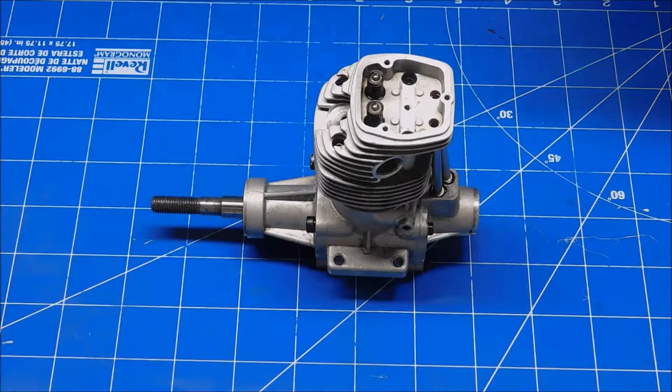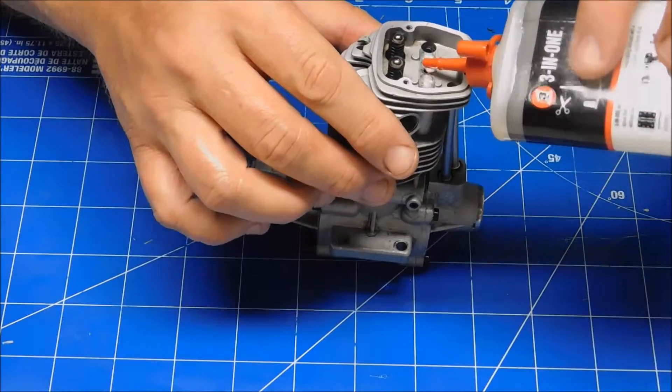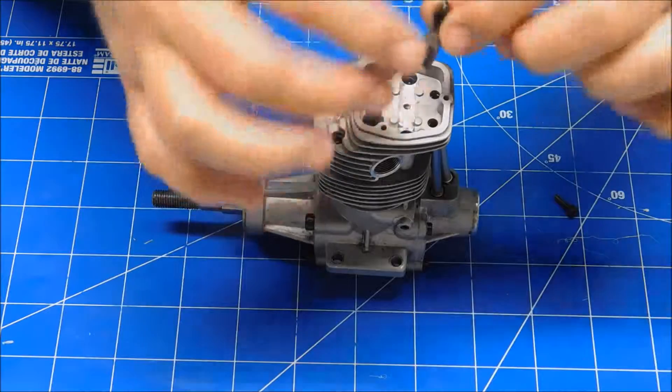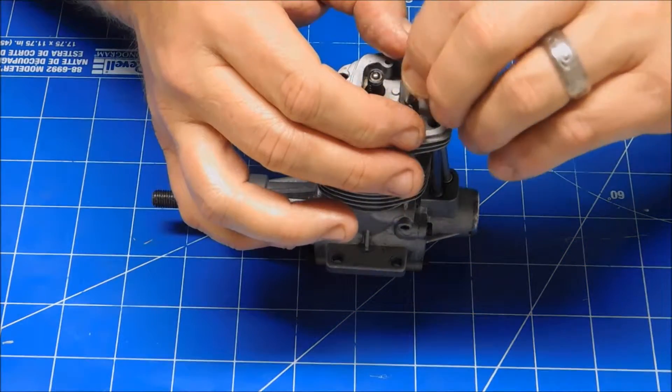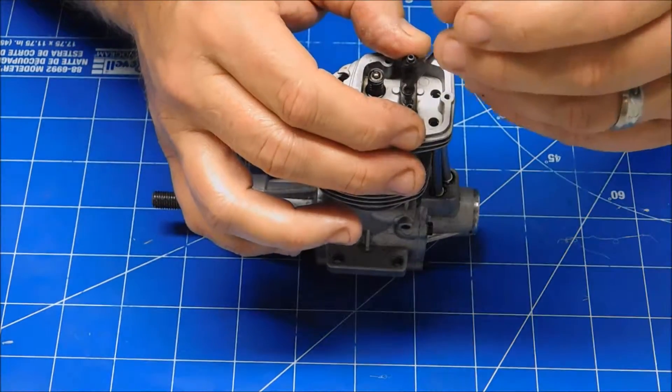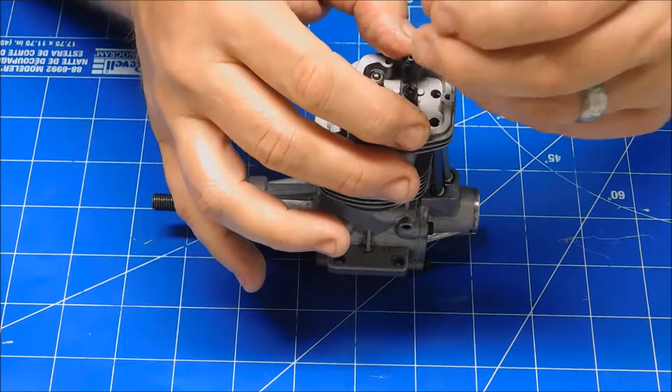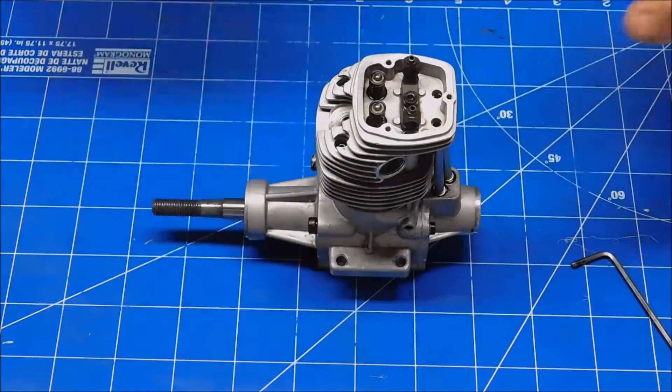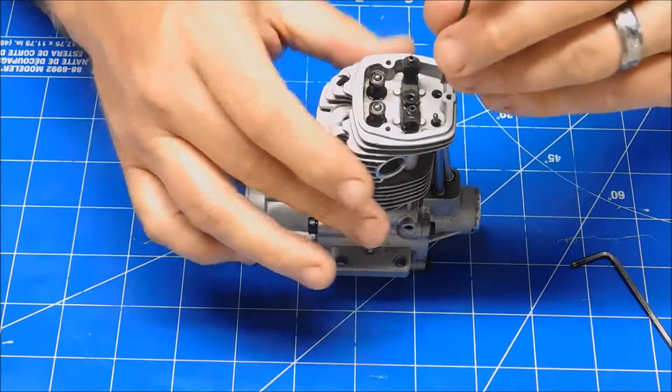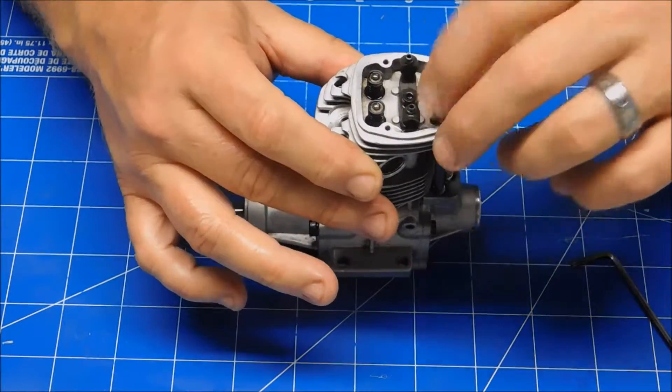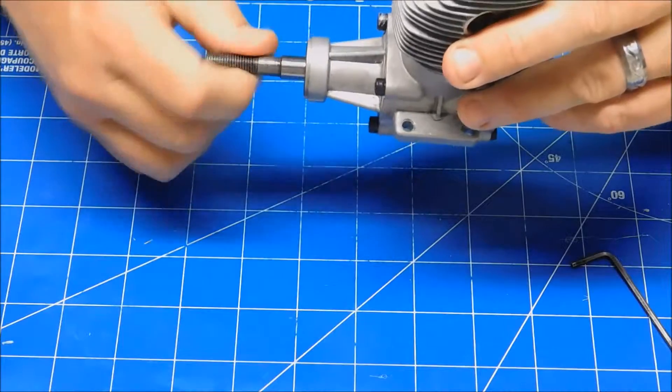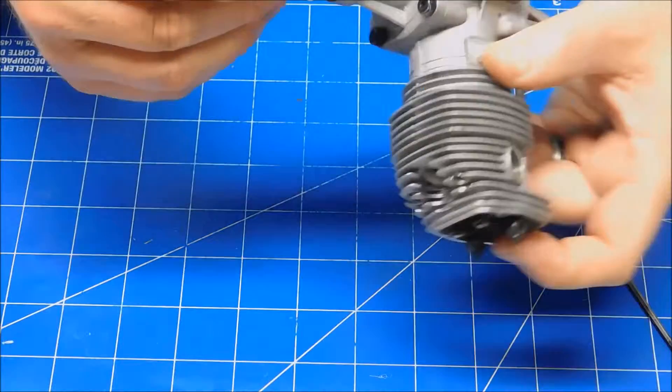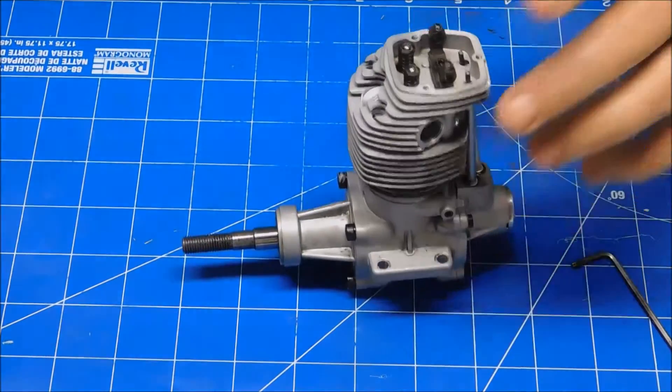Next thing is to install our rocker arm support. Again, another drop of oil in that hole. This rocker arm support can go either way, so there's really no issue there. Okay, so that's in place. We're good to just kind of drop those guys in here. I can feel them moving. I think I'm at bottom dead center.